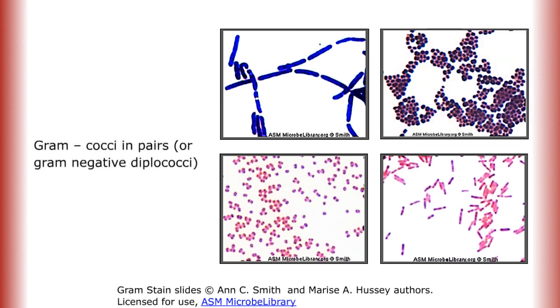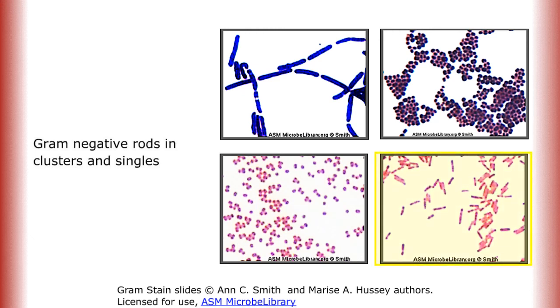Gram-negative cocci in pairs. Gram-negative rods in clusters and singles. Gram-positive rods in chains.